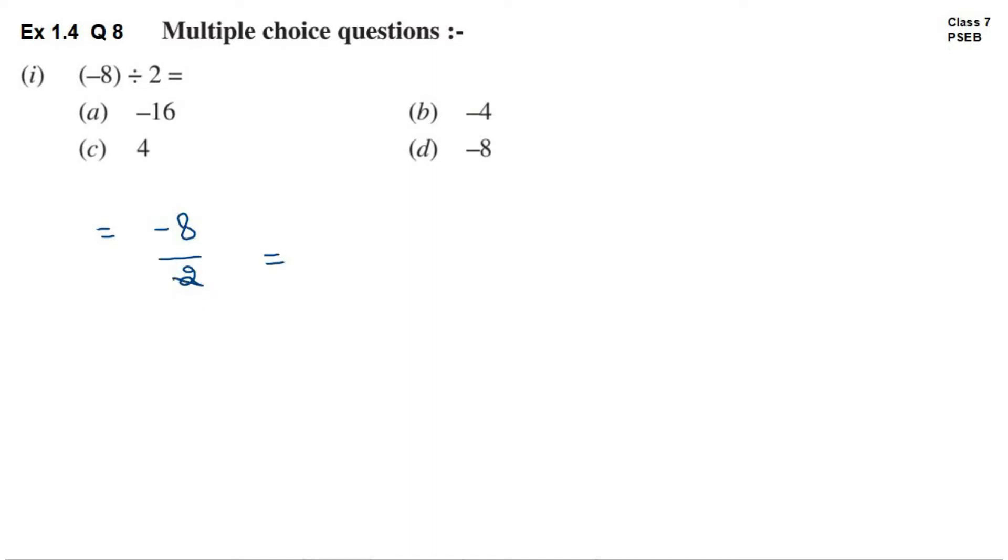This is equal to 2 1s are 2, 2 4s are 8. So yeh aagya minus 4. Ab yahan par ek hi minus ka sign hai, so answer mein bhi minus ka sign aayega. So minus 4 is the answer. So B is the correct option.